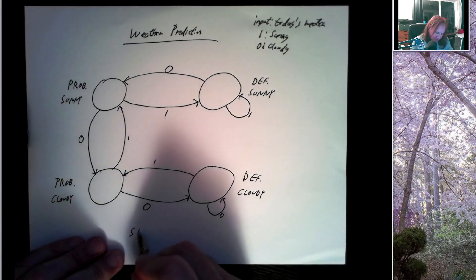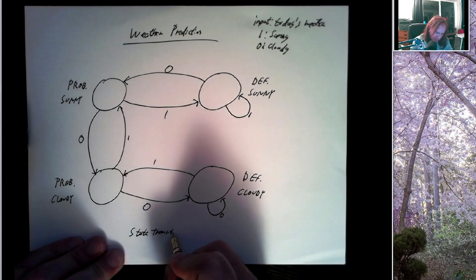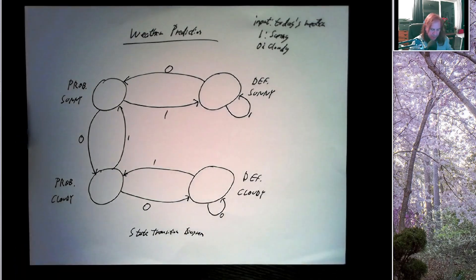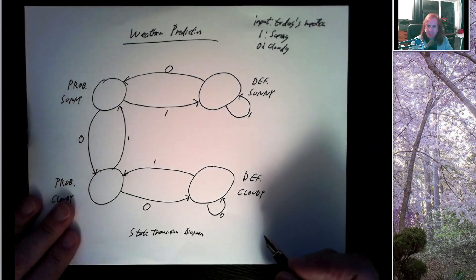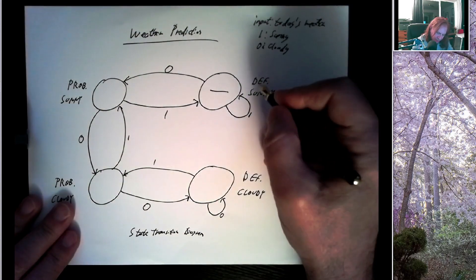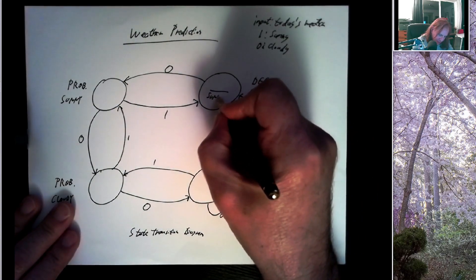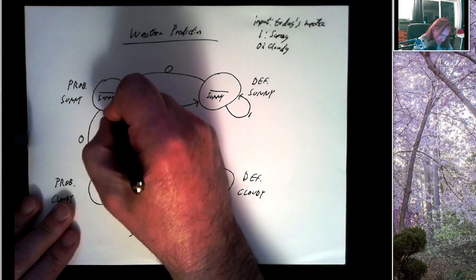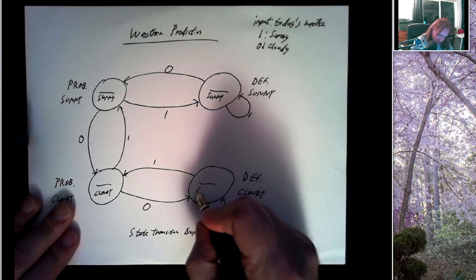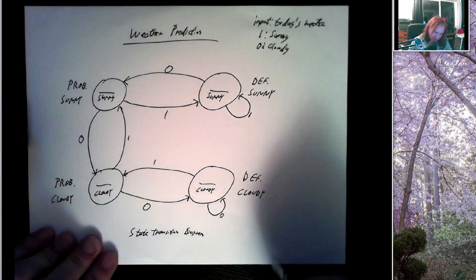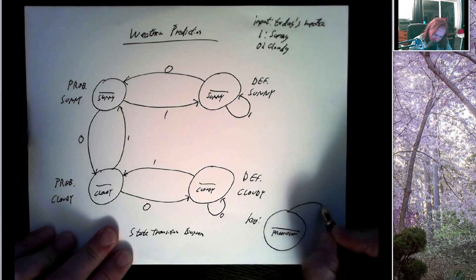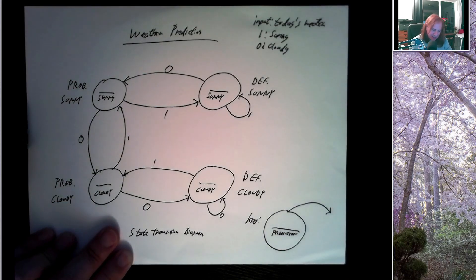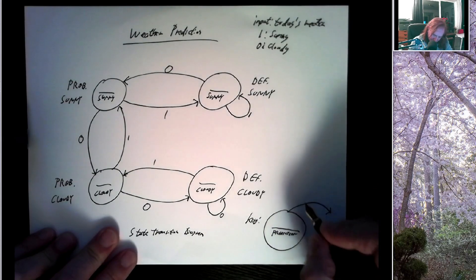This is called a state diagram or state transition diagram. I can put a symbol inside each circle to indicate the actual prediction — sunny, sunny, cloudy, cloudy. When you have one of these diagrams, there's usually a key. In the key, I'd show the state name and its prediction, and then show an arrow labeled with what determines which arrow to follow — in this case, today's weather.